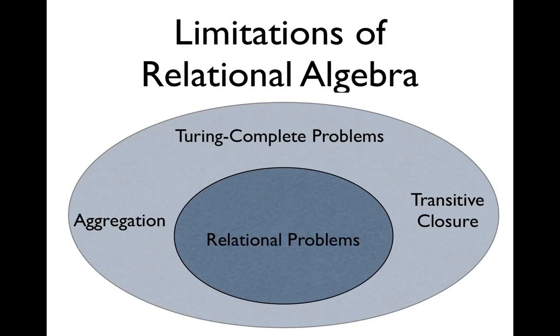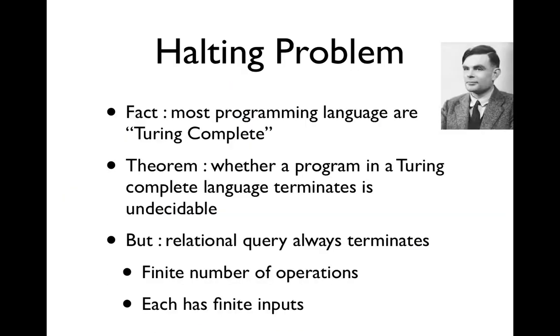Relational algebra has a lot to recommend it. But it's worth bearing in mind that it is limited in certain fundamental ways. The biggest glaring lack is that it's not Turing complete. The easiest way to see that is the halting problem. It is a classical theorem that if you've got a Turing complete language and you write a program in it, it is not decidable whether that program will halt. But in a piece of relational code, each operator is guaranteed to terminate. So there's got to be something missing from relational algebra.